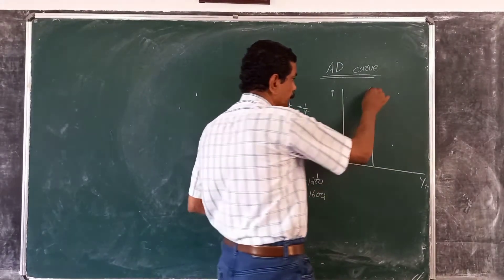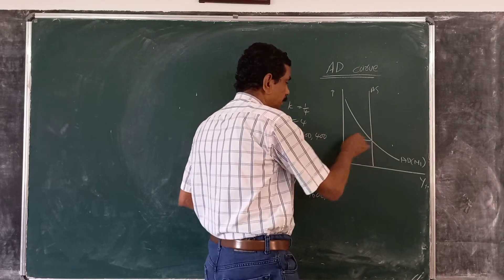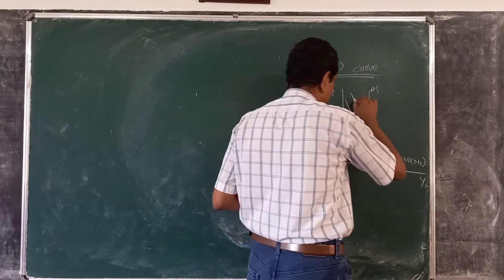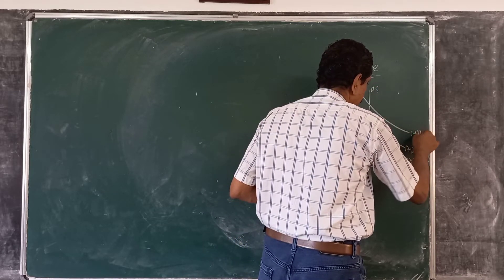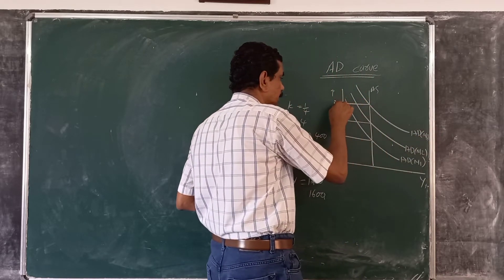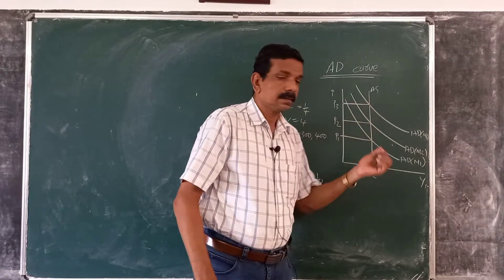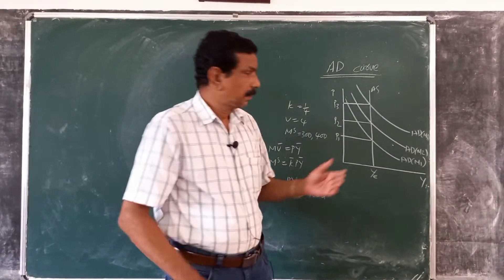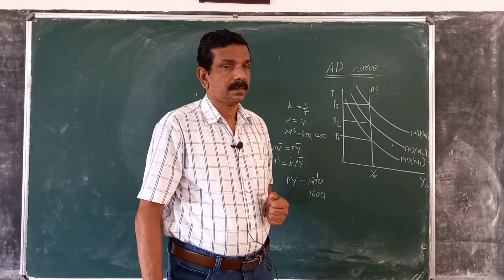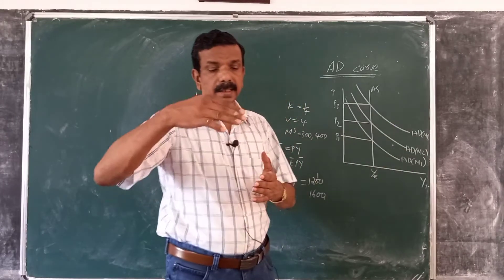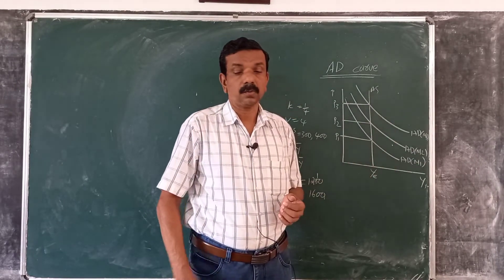We have aggregate supply here. For a given money stock, when aggregate demand corresponds to money supply M1, price is P1. If money supply increases to M2, price is P2. If money supply increases again to M3, price is P3. Aggregate supply is fixed at full employment level, as derived earlier. Combining these, we introduce various aggregate demand curves associated with different values of money supply. If money supply increases, the aggregate demand curve shifts right, and only prices will increase while output remains constant.